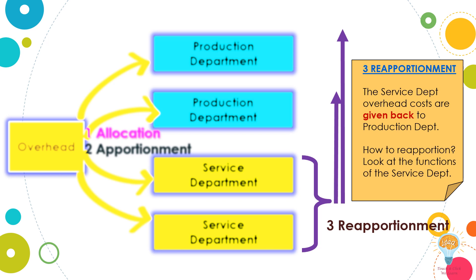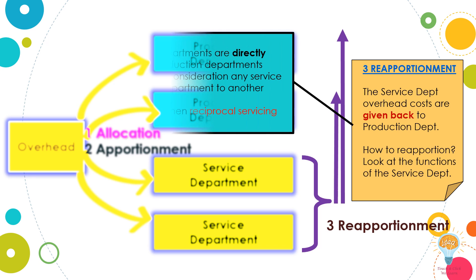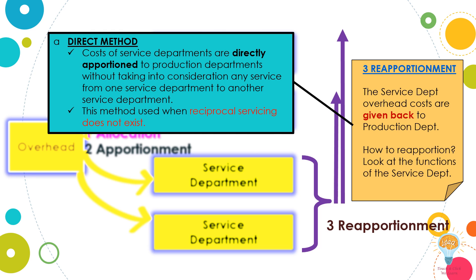There are various methods of reapportionment of service department costs to production departments. We are going to discuss two methods: the direct method and the repeated distribution method. Under the direct method, costs of service departments are directly apportioned to production departments, without taking into consideration any service from one service department to another service department.